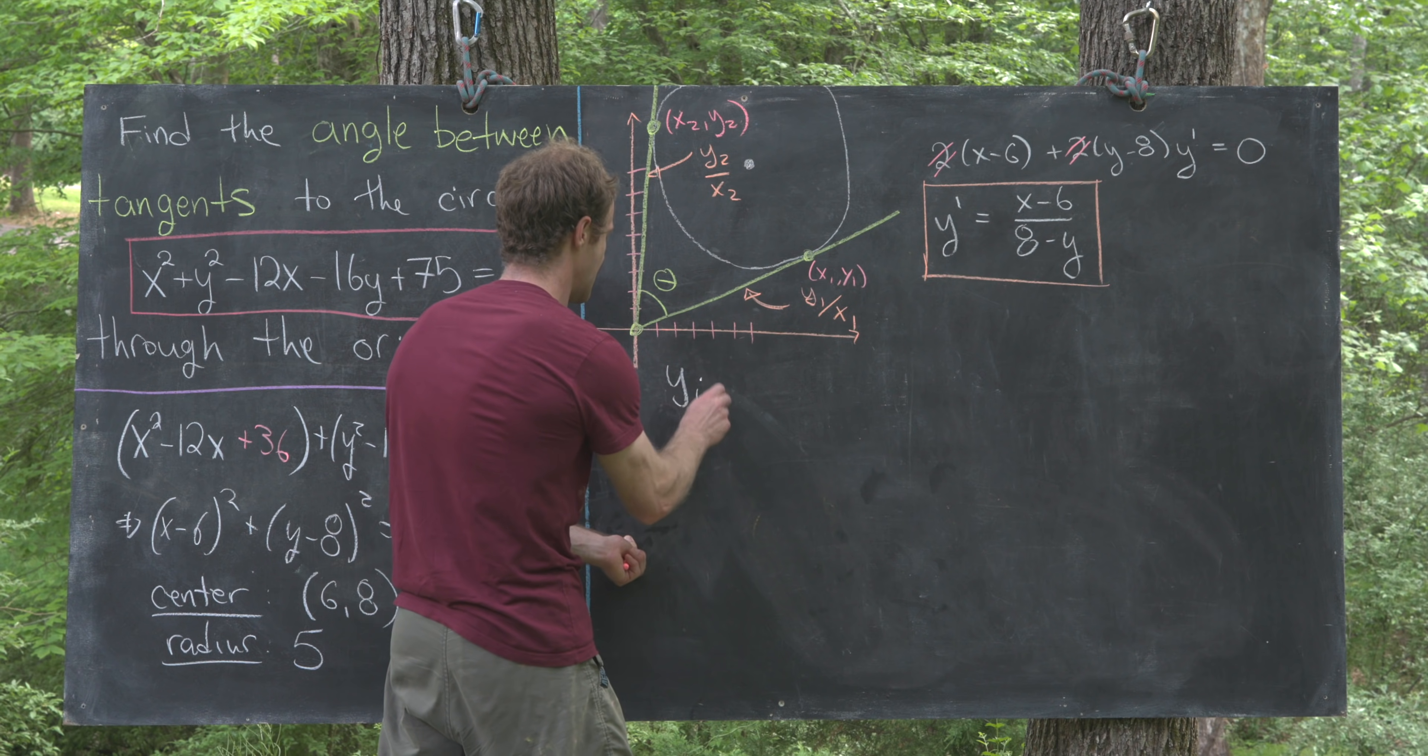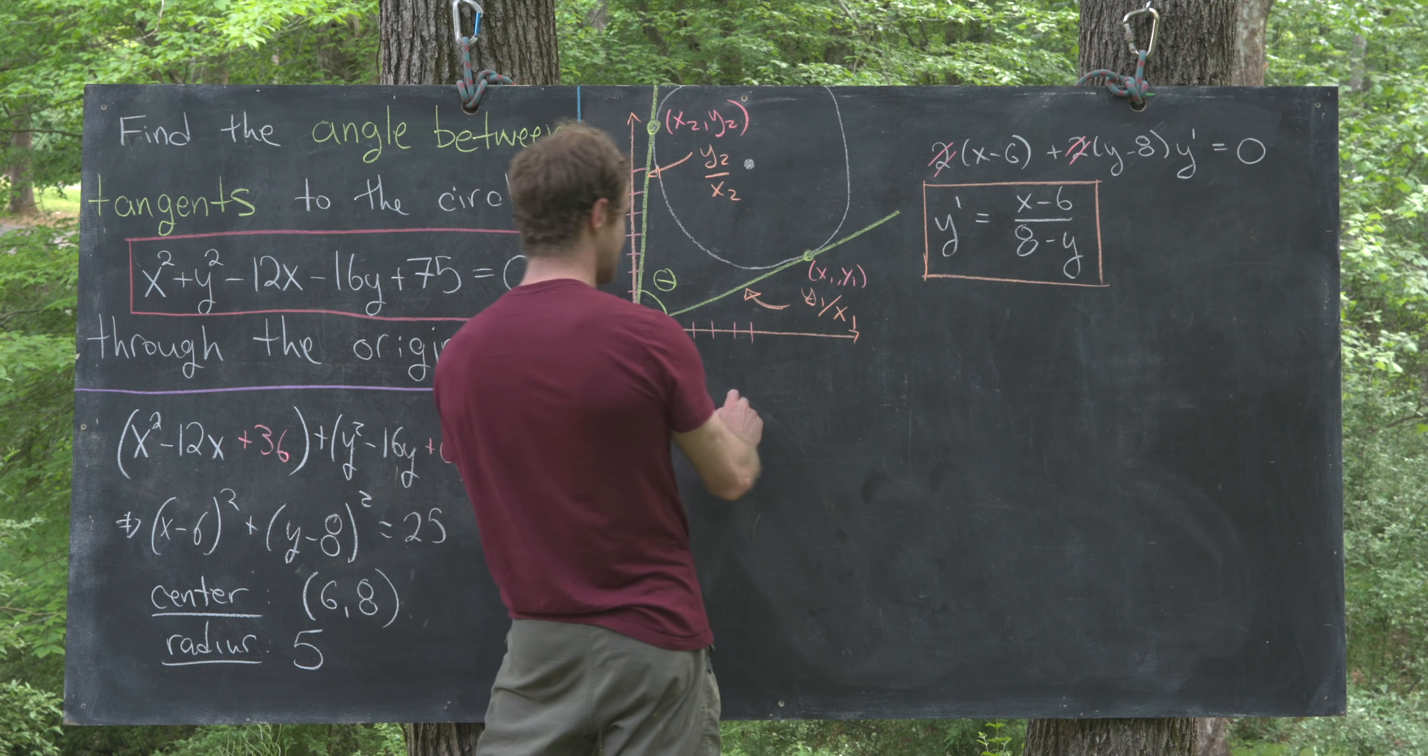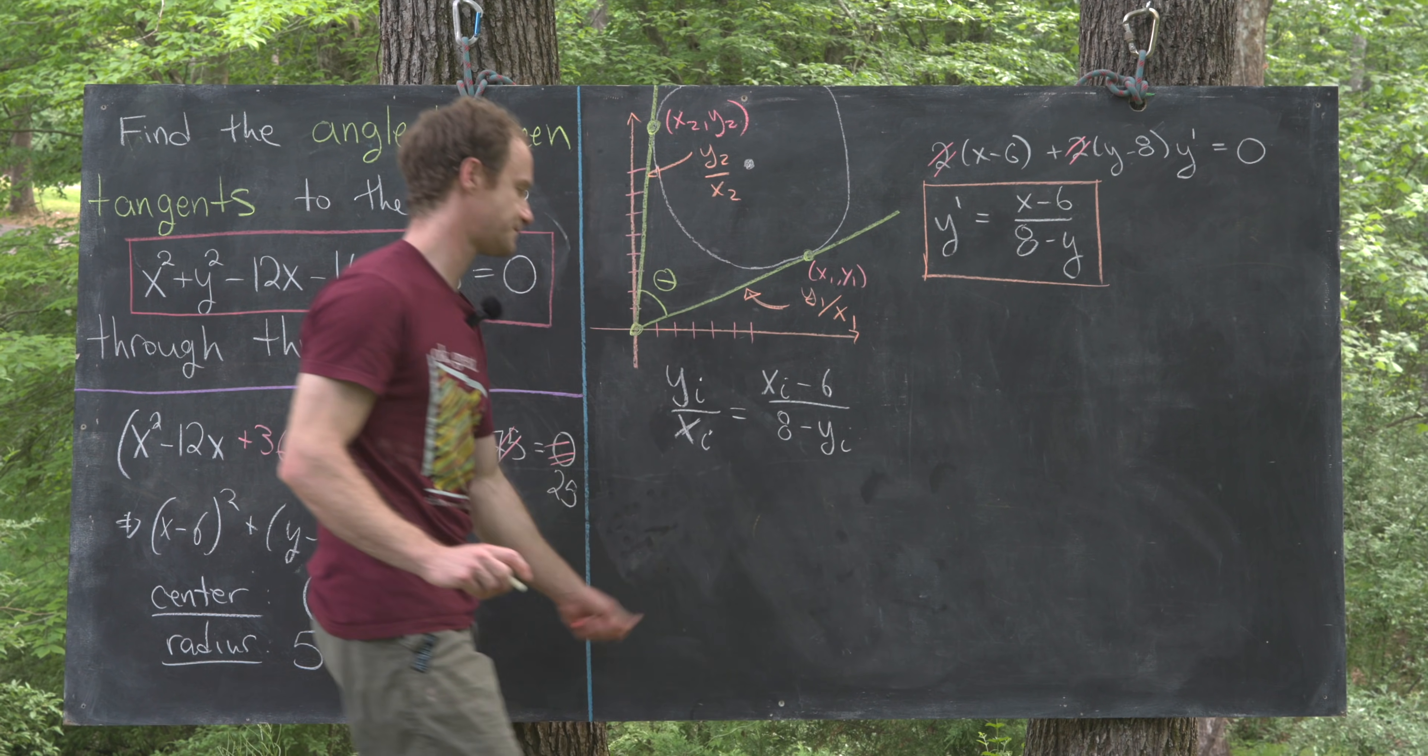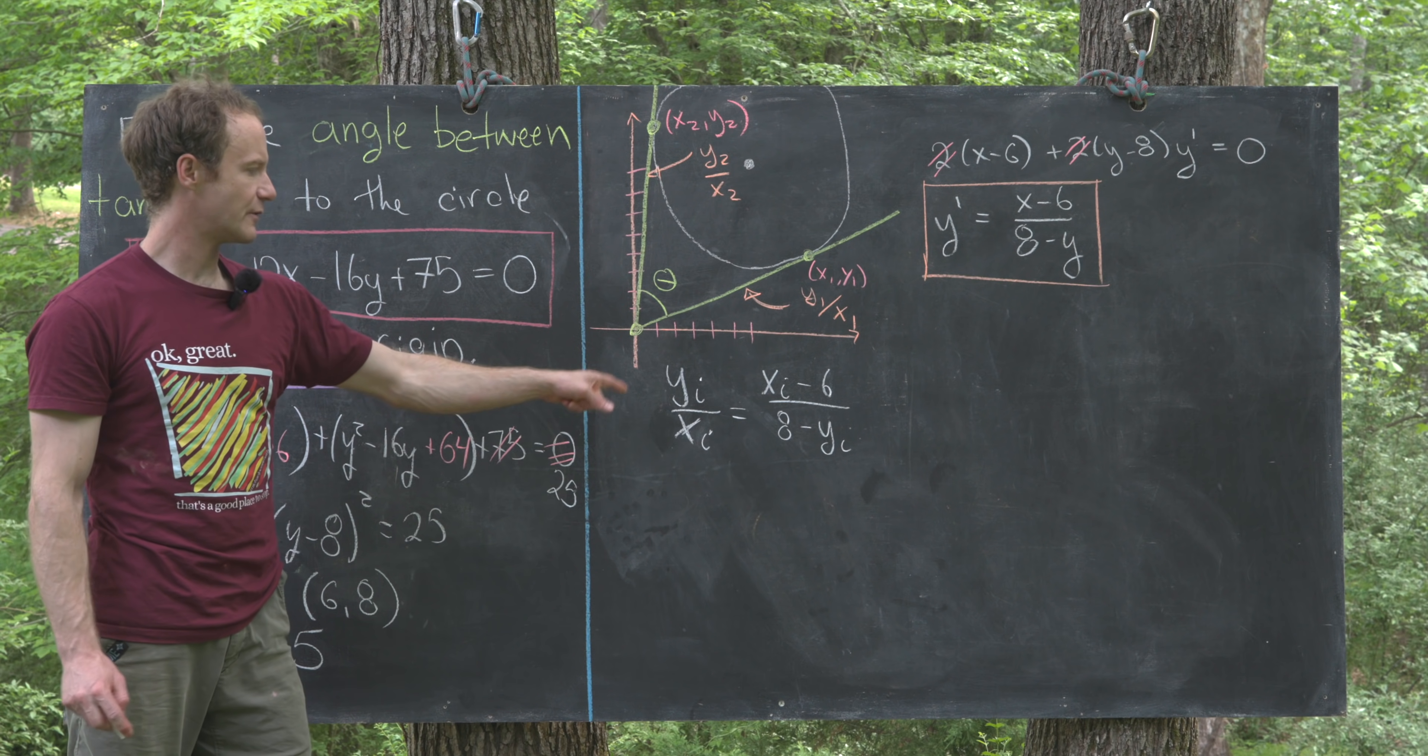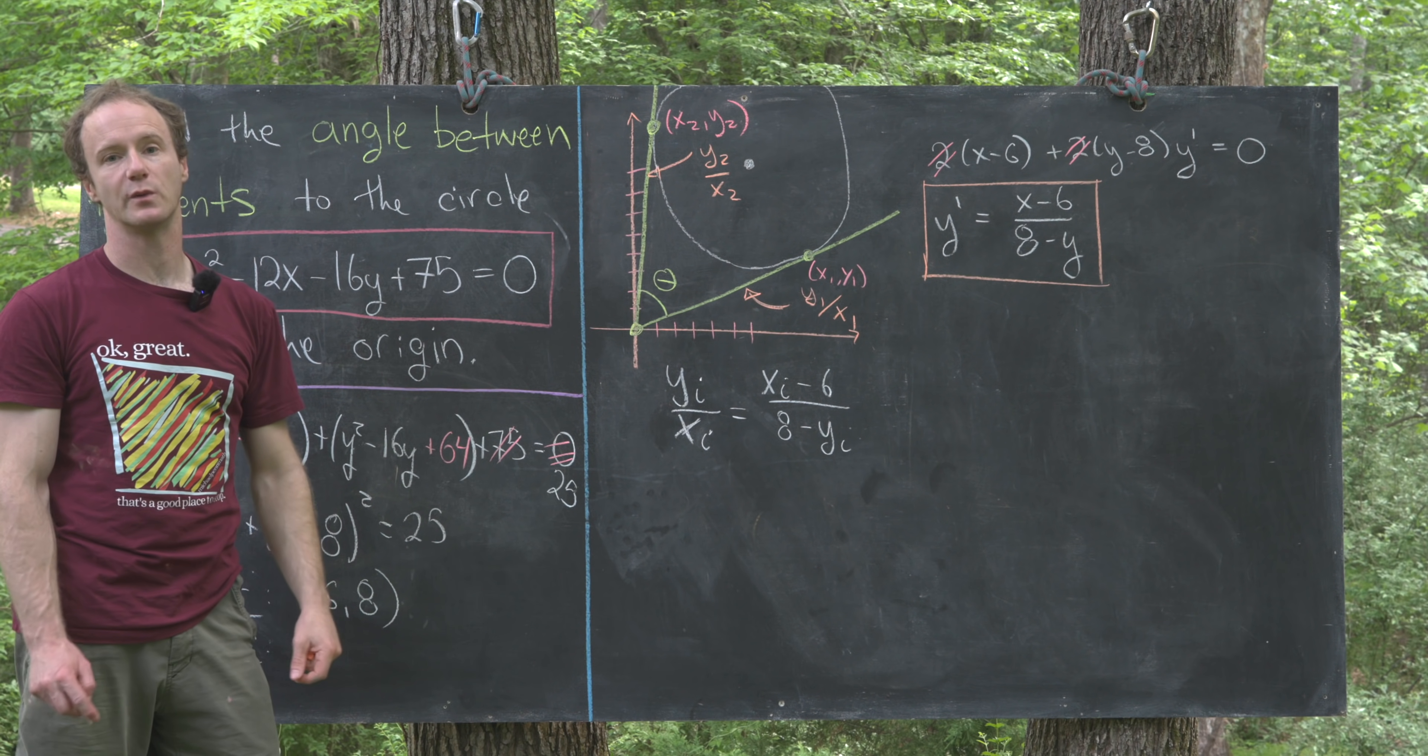Let's put those together so we can get an equation for solving for those points. Let's write yi over xi—that'll be the slope calculated one way, where i is either 1 or 2 because we can do them both at the same time—and that's also equal to xi minus 6 over 8 minus yi. This is the slope using change of y over change of x considering the origin is on the line; this is the slope using the derivative. Now we've got an equation that relates xi with yi.